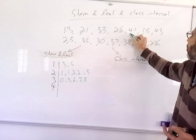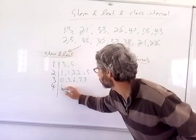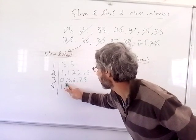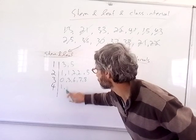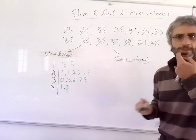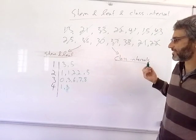And now 40. I've got 41, 43. So I'm going to put 41 and, oh, I like 3. So that's pretty easy to make the stem and leaf.